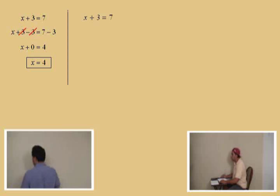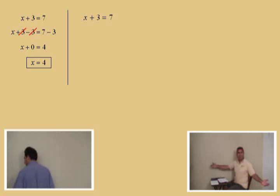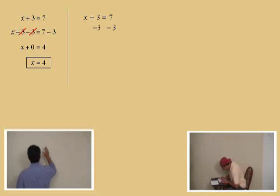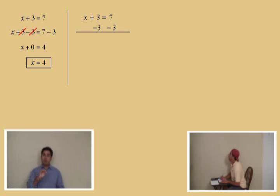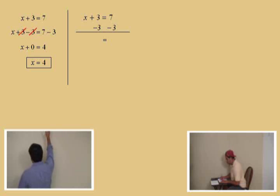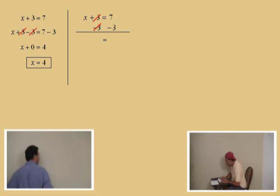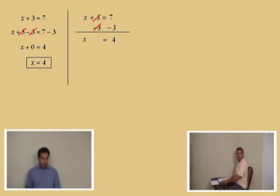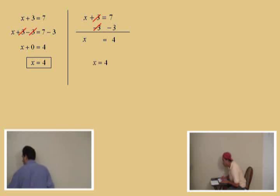The format we're going to use is a vertical format. Same problem: x plus three equals seven, and we're going to subtract three from both sides. Write this down — as a matter of fact, write it down twice. We subtract three in a vertical format, put a bar here, and bring down the equal sign. On the left side, plus three minus three cancels out, leaving only x. On the right side, seven minus three is four. So our solution is x equals four.